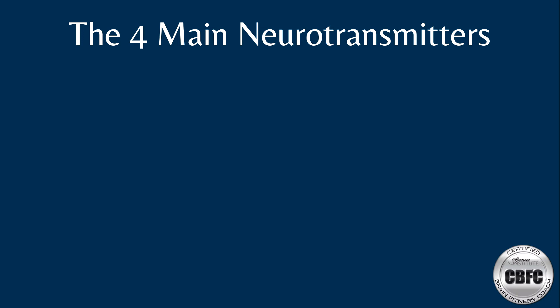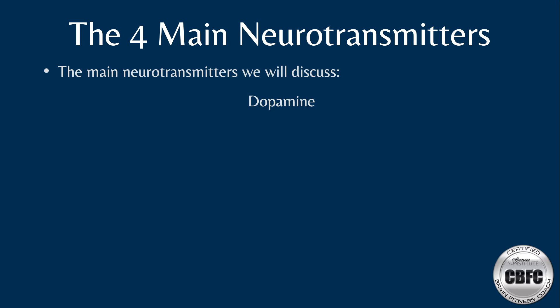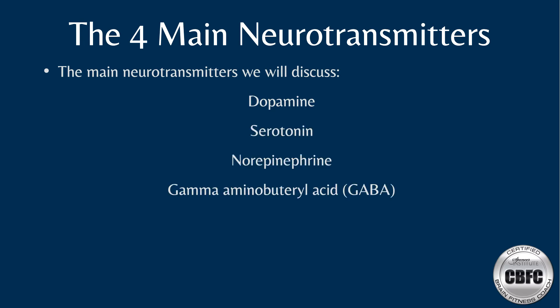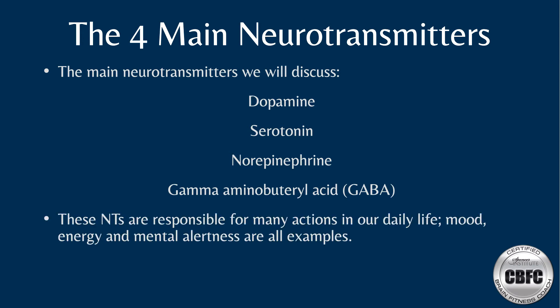The four main neurotransmitters we will focus on are dopamine, serotonin, norepinephrine, and gamma-aminobutyric acid, or GABA. These neurotransmitters are directly involved in our ability to focus, concentrate, activate pleasure centers, regulate mood, provide energy, enhance mental alertness, and even relax the body. A coach can clearly see the importance of knowing these neurotransmitters.